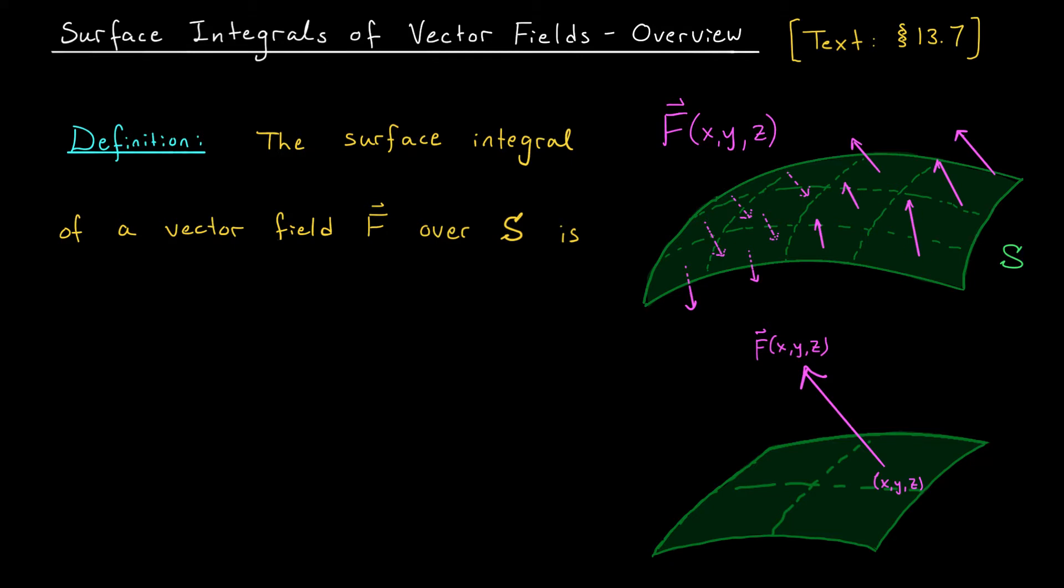Also, it flows at different rates. Over here the rate looks a little bit smaller than the rate over here. The arrows are longer. So we want to know, what's the net rate of flow of this fluid as it passes through the surface S? Does it tend to flow more in this direction or this direction? And by how much? That's the question we're trying to answer.